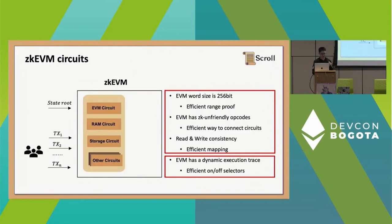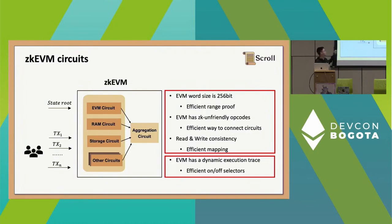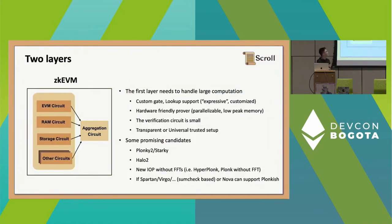In our ZK-EVM we have two layers. The first layer proves the EVM logic directly: it contains an EVM circuit to prove state transitions, a RAM circuit to prove read/write consistency, a storage circuit for state updates, and other circuits like an ECDSA circuit for signatures. Because this results in many proofs, the second layer is an aggregation layer which aggregates multiple proofs into one proof.